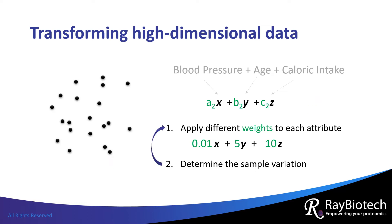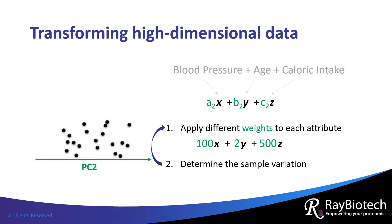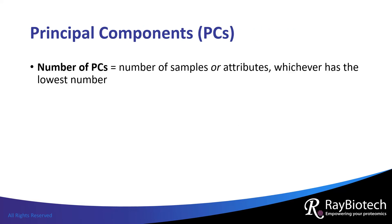PCA generates different PCs, with each PC weighting the attributes differently. Here, blood pressure is now weighted the most while age is weighted the least. It is important to point out that each PC is independent of one another. The total number of PCs that are generated is determined by the lowest number of samples or attributes that are being analyzed.